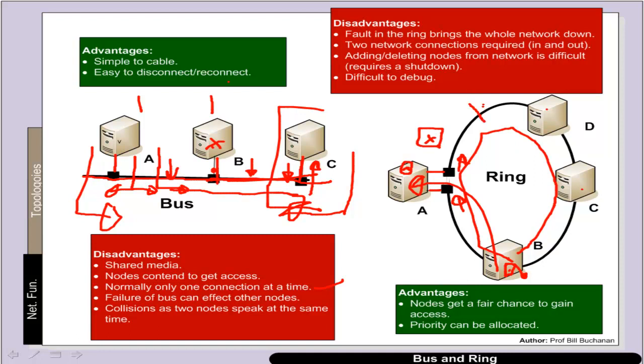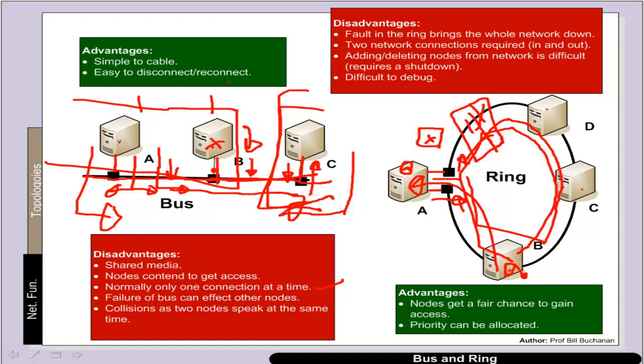Unfortunately a fault on the ring can cause the whole ring to fail. Often what we see is actually two rings, so that if one ring fails, then the other ring can still be used. But unfortunately we end up with four connections in that case. Another problem with this is that often it's a cable which is broken, and if the two rings are in the same cable, then both rings will actually be broken. Often it is also difficult to debug and to find out where the actual fault is because none of the nodes will actually work on the network. On the ring network, none of the nodes will actually operate.